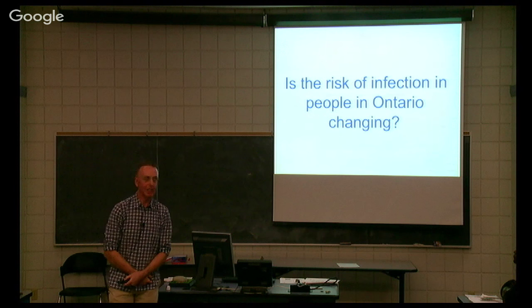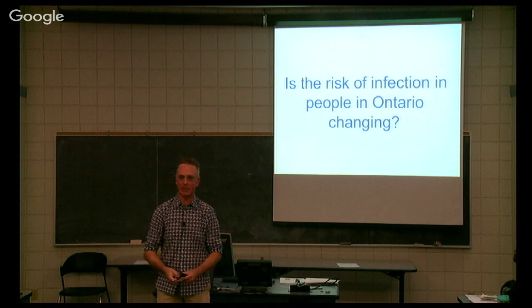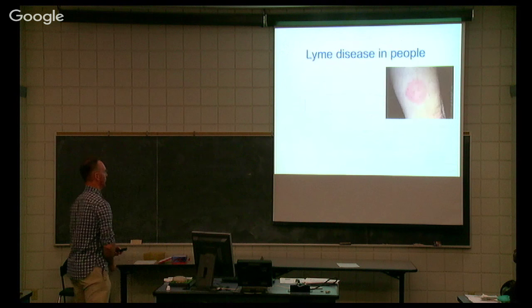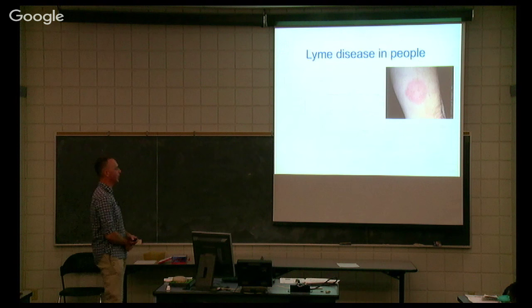What about people? We don't do serology on people, but we do track disease in people. Since at least 2002, Lyme disease has been a reportable disease in people. It's ironic — it's reportable in people, but there's nothing like that in our pets, yet we're in the same environment. I need to tell you a few things about the disease in people because it is different from dogs.